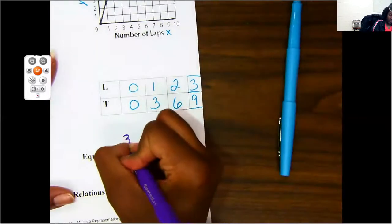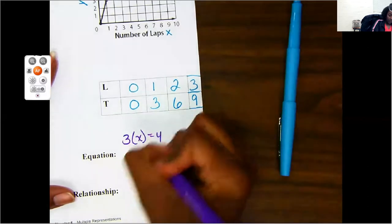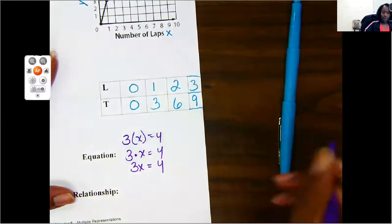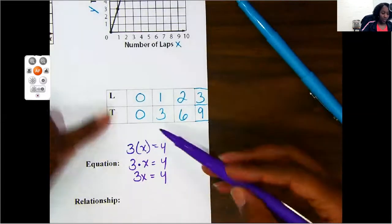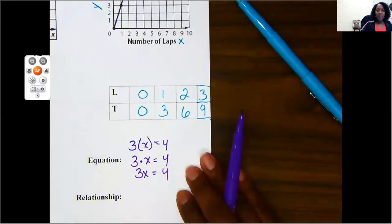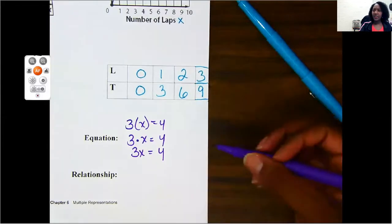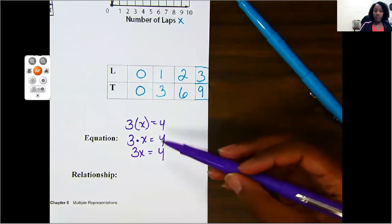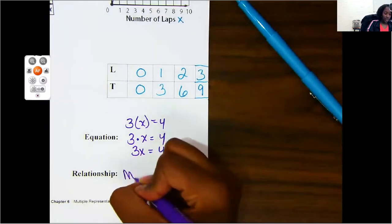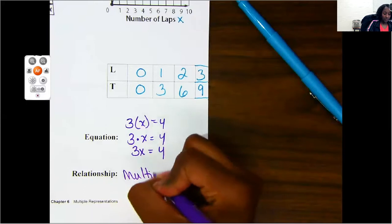Now remember, you can represent multiplication with a parenthesis, with the dot, or by simply putting it next to your number, okay? What am I doing to x to get to y? I'm multiplying it by three, okay? Now, what type of relationship is this? Is this an additive relationship or a multiplicative relationship? Remember, an additive relationship is when you add or subtract. A multiplicative relationship is if you multiply or divide. What did I do here? I multiply. So that means my relationship is a multiplicative relationship.